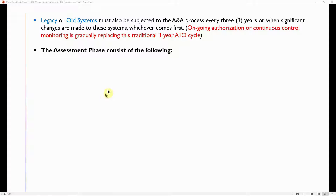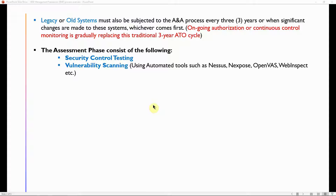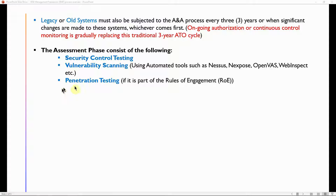The assessment phase consists of the following: security control testing, where an independent assessment team comes in to test controls manually; vulnerability scanning using automated tools such as Nessus, Nexpose, SCAP, and WebInspect; and penetration testing, if it is part of the rules of engagement.